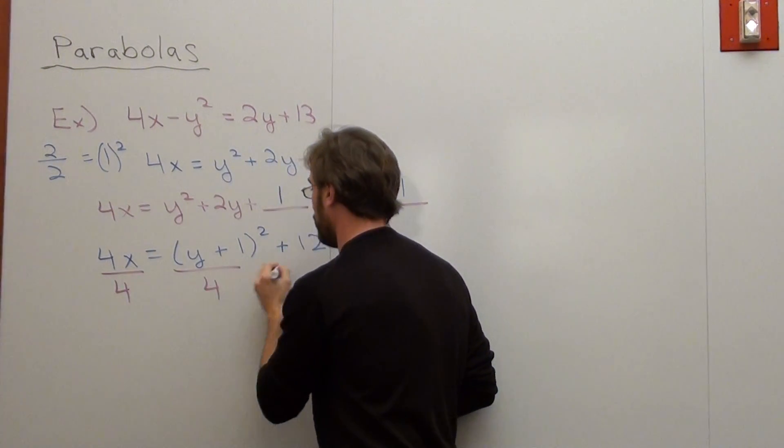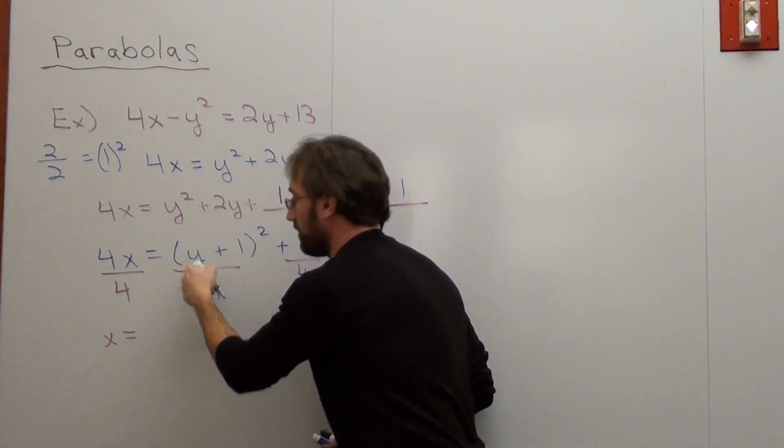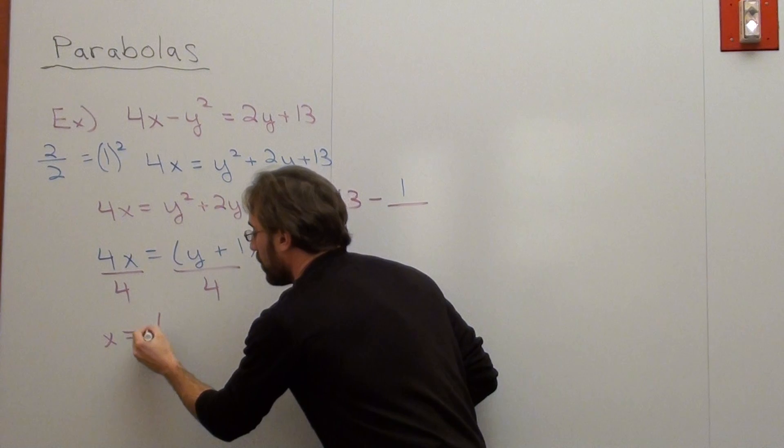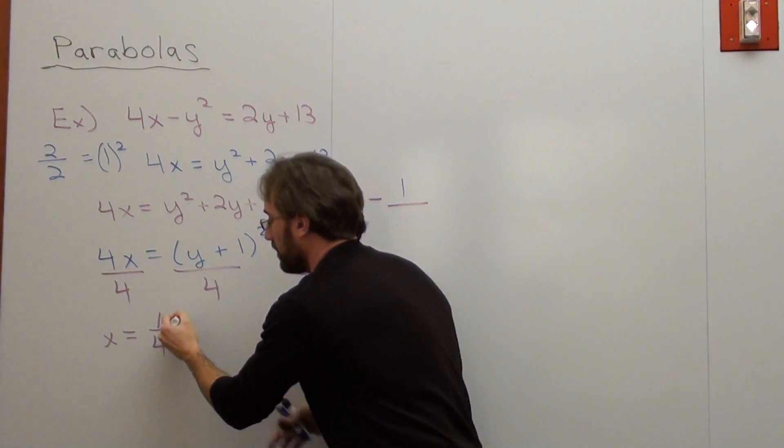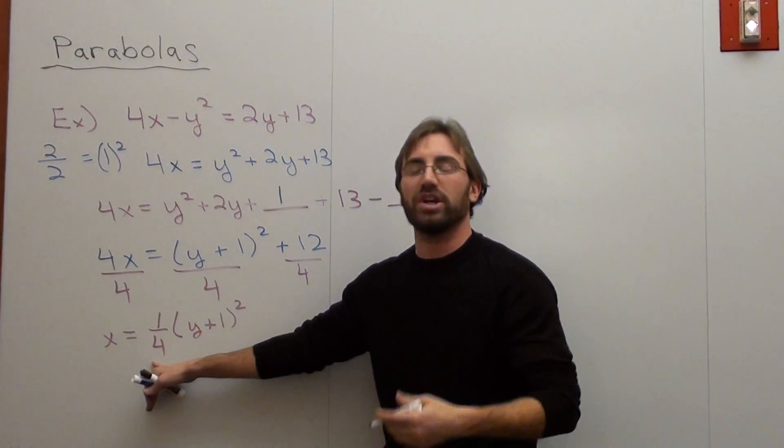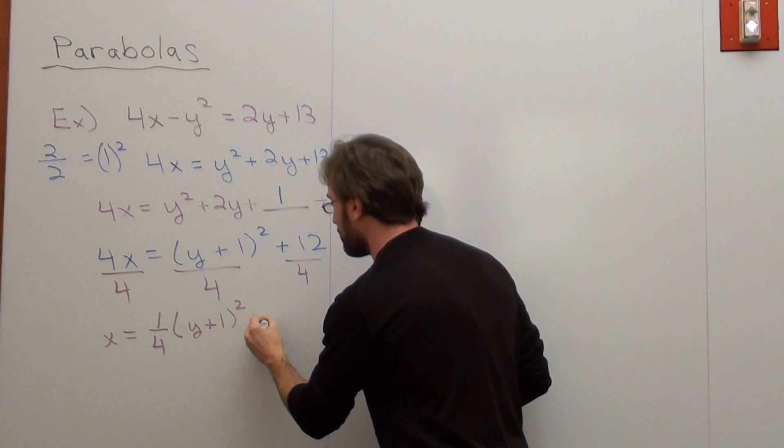So, divide by 4, divide by 4, divide by 4. x equals y plus 1 quantity squared divided by 4 is the same thing as 1 fourth. I'm just going to pull out the 4 in front: 1/4 times y plus 1 squared. You don't have to, but in this way it shows you what the a term is, which is very convenient. And that's plus 3.